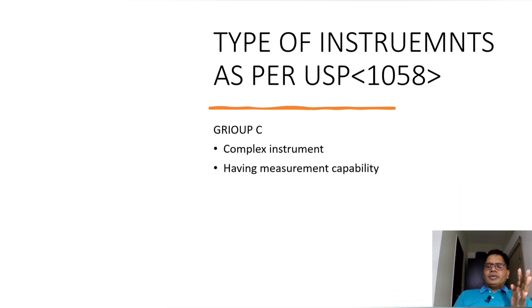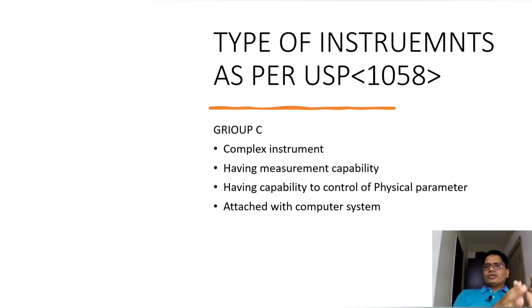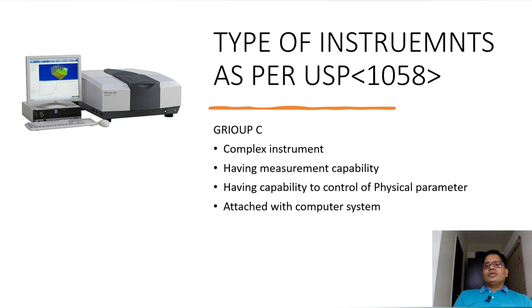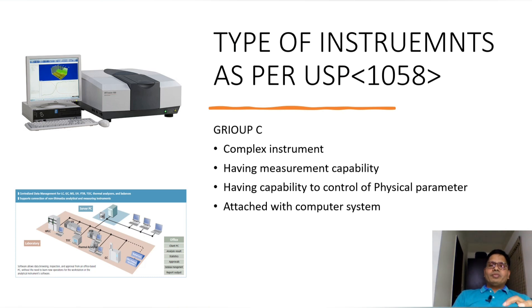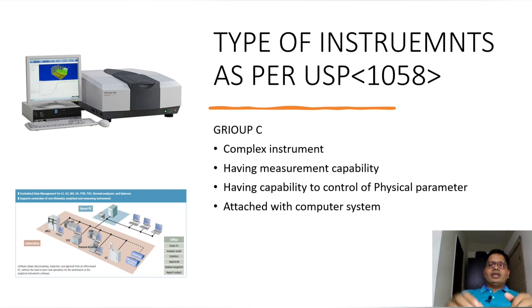Group C instruments are complex instruments that have measurement capability, capability to control physical parameters, and are attached with a computer system. For example, a UV spectrophotometer attached with a computer system comes under Group C. Server-based instruments — where a server exists and different instruments are attached to it — also come under Group C. To summarize: Group A has no measurement capability; Group B has measurement capability and physical parameter control but is not attached to a computer; if it is attached to a computer system, it automatically becomes a Group C instrument.